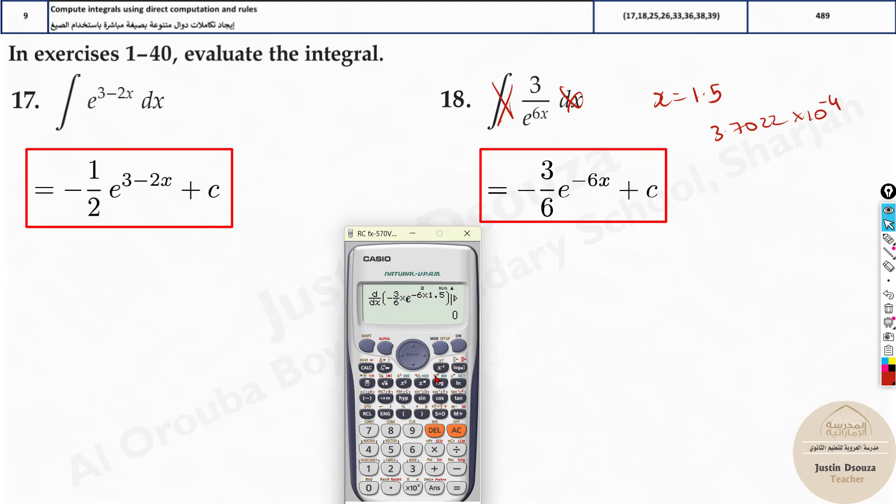But now what if you put this as over here only, x is 1.5? That will be a constant value, right? It will just be a constant - it will be 0 because there is no variable over here. So please be careful.